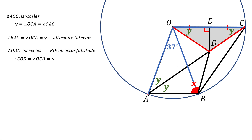Now let's look at triangle AOB, which is also an isosceles triangle, so angles at the base should be the same. One base angle is Y plus Y, which is 2Y, and the angle at B is also 2Y. Notice that this 2Y and the angle COB at the top are alternate interior angles for the parallel lines, so they must be congruent — angle COB is also 2Y. That 2Y consists of the gray angle Y and the white angle, which must also be Y.